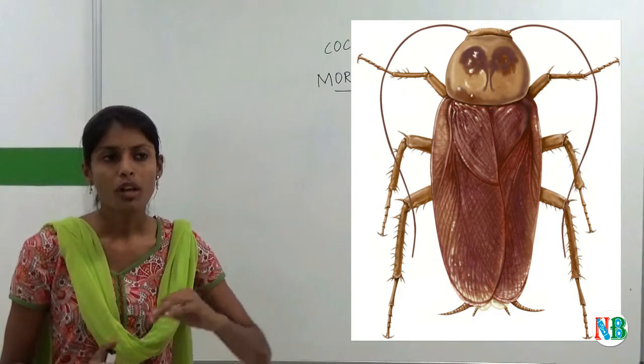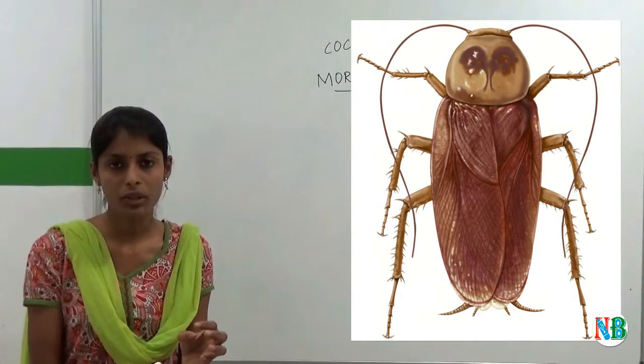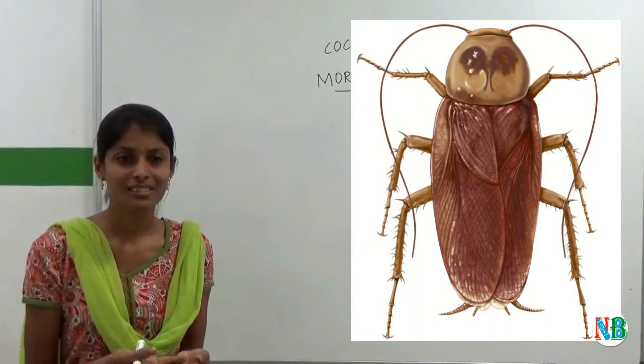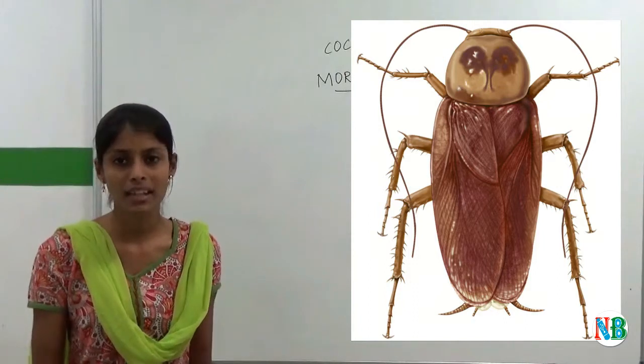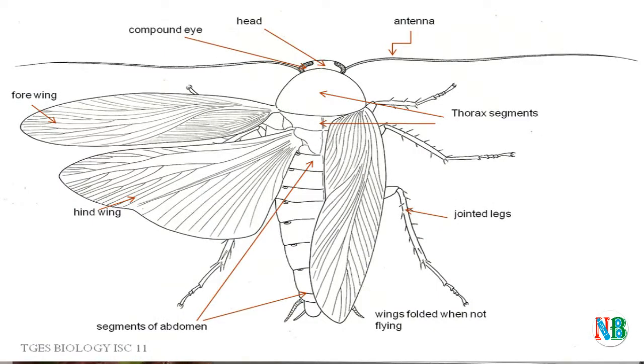So mostly the forewing will be opaque. So we can't see the hindwing through the eyes. But if the cockroach flies, we can see the hindwing. And the hindwing is very large when compared to forewing. So thereby it can help in flying.